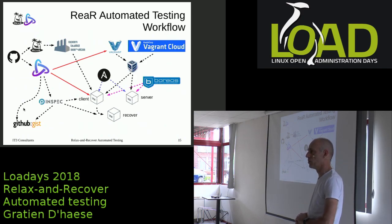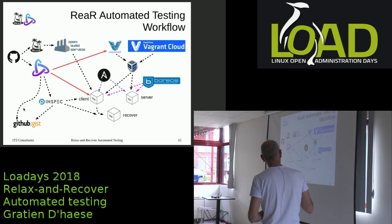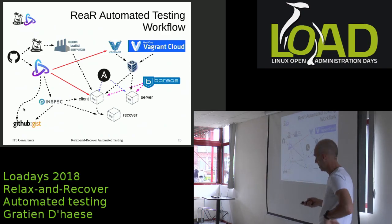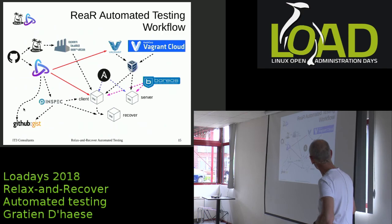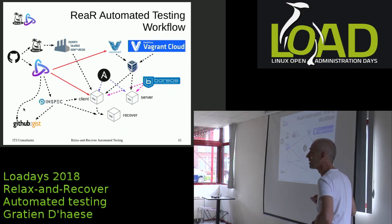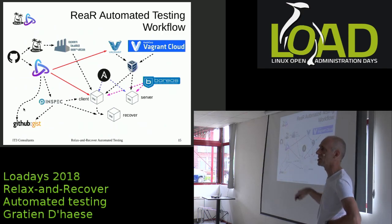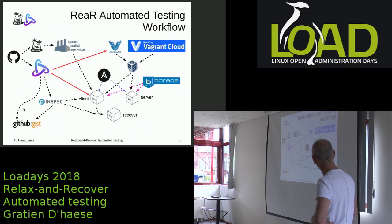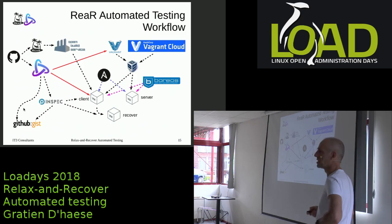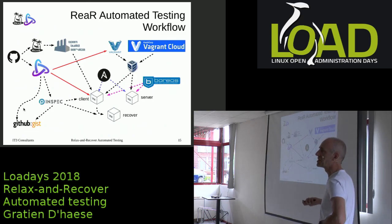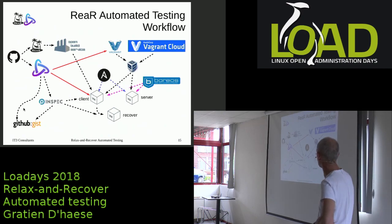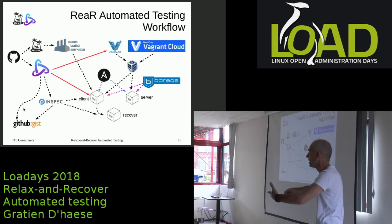Everything is logged: the recovery log, the backup log, the automated testing log, and the InSpec inspection results before and after — all written to a text file. I publish it on GitHub via Gist because I have to prove to customers like Bareos that it works. This is effectively the complete picture. I'm also thinking of replacing the server with a Docker instance — using the Bareos backup server in a Docker instance is the next thing I want to do.